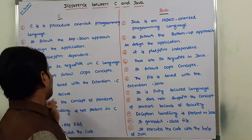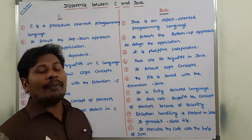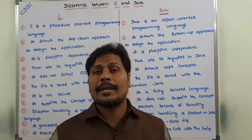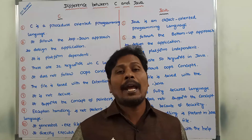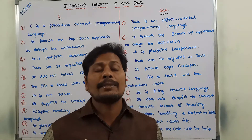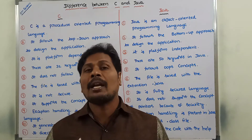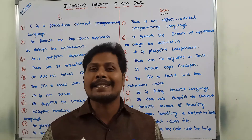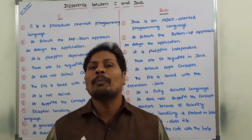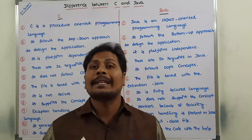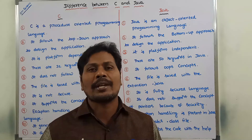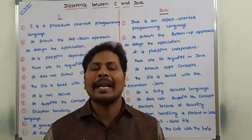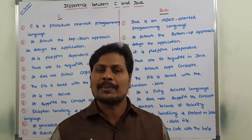Next: C language is not secure. Whereas Java language is fully secure because of data abstraction and exception handling mechanisms.